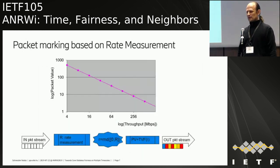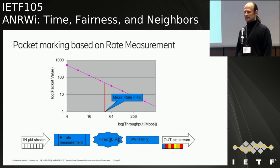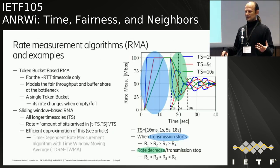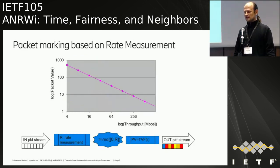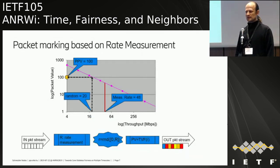Based on these throughput value function curves, we define packet marking. We have incoming packets, we measure the rate, and these are the rate-based packet marking policies. We measure rate r, determine a uniform random rate between zero and that rate, take the value of the throughput value function at that point, and mark that packet value on the packet. By having that marking and maximizing the transmitted packet value in the core, we realize the resource sharing targets.